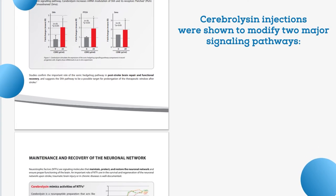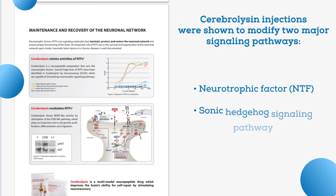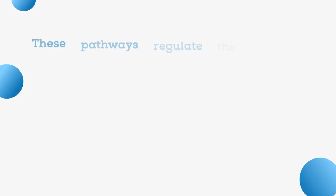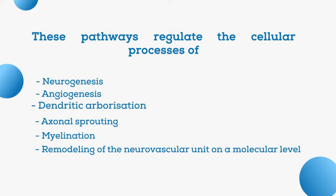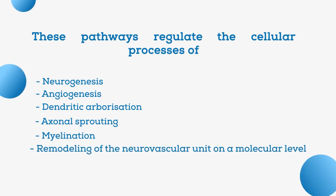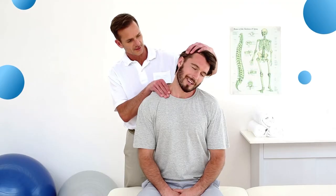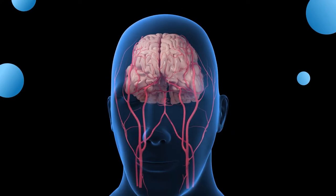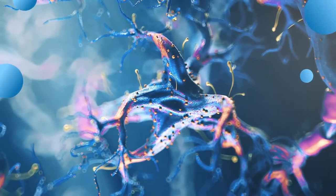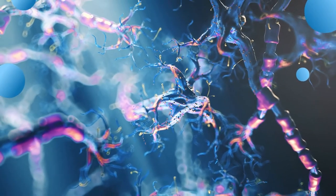Cerebrolysin injections were shown to modify two major signaling pathways: number one, the neurotrophic factor (NTF) pathway, and number two, the sonic hedgehog signaling pathway. These pathways regulate cellular processes of neurogenesis, angiogenesis, dendritic arborization, axonal sprouting, myelination, and remodeling of the neurovascular unit, supporting the maintenance and repair of the neuronal network. Cerebrolysin also prevents the formation of toxic protein aggregates (amyloidosis) and lowers the level of inflammatory processes.